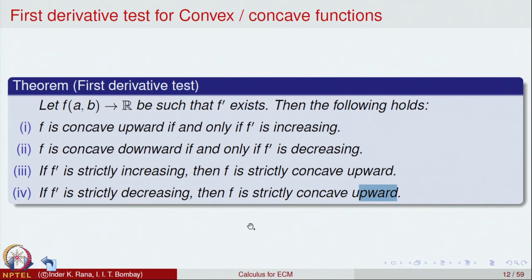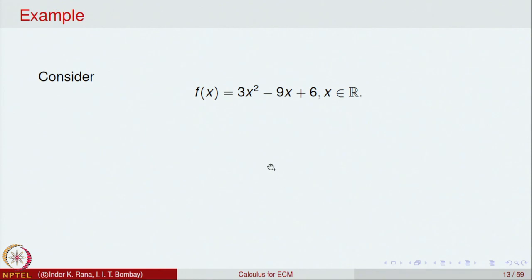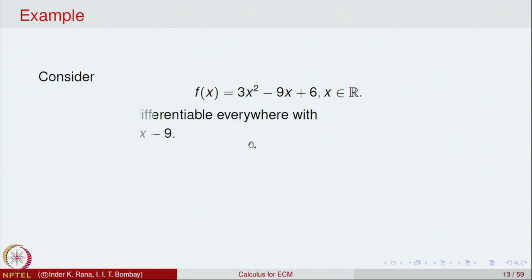We will not be proving these theorems — the proofs are slightly technical — so we will assume them and go ahead and apply them in examples. Let us look at the example f(x) = 3x² - 9x + 6, with x in ℝ. The domain is the whole real line. This is a polynomial function, so it is continuous and differentiable everywhere. Let us compute the derivative: f'(x) = 6x - 9.